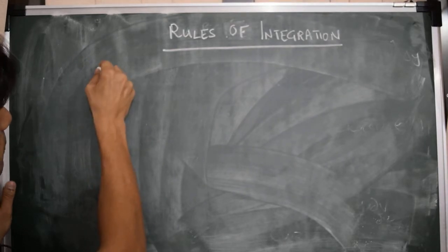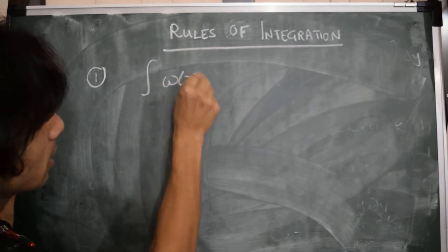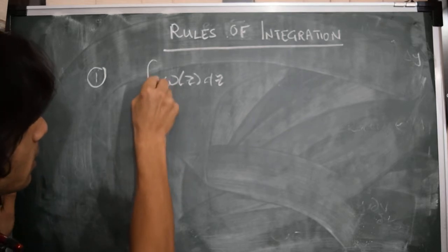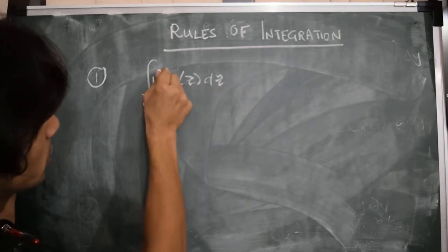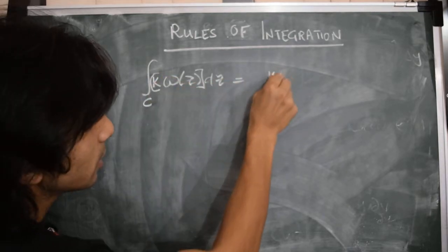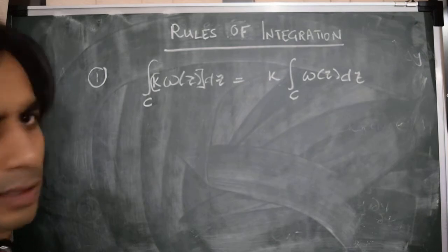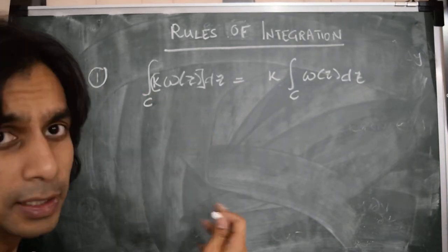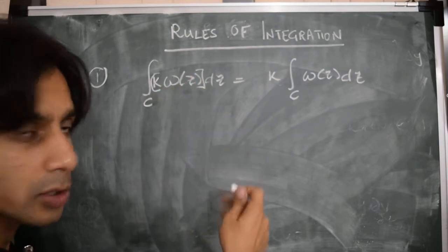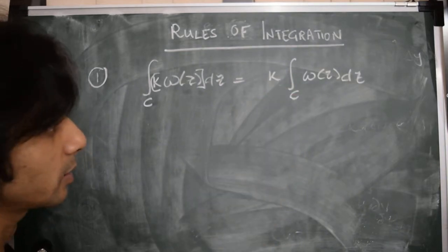The first property is that if we are integrating a complex function w(z) dz over some contour c, and we multiply this with a complex constant k inside the integral, then we can take this complex constant outside the integral and write this integral as k times the integral of w(z) dz. This simply follows from the way the integral is defined as a Riemann sum — if you multiply the value of w(z) by a constant at every point in the complex plane, the overall sum gets multiplied by that complex constant k.